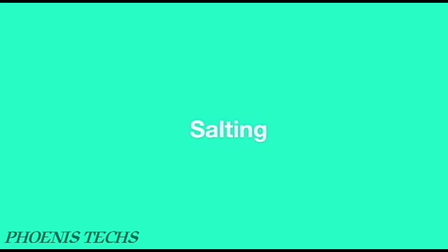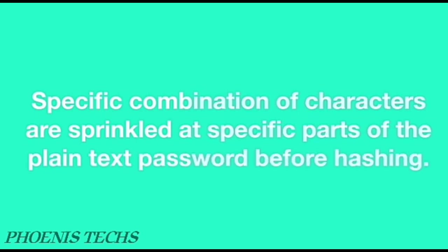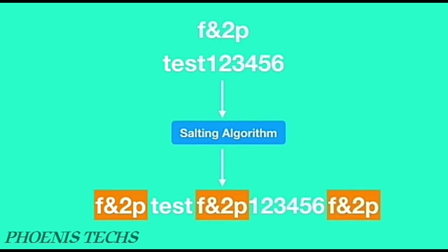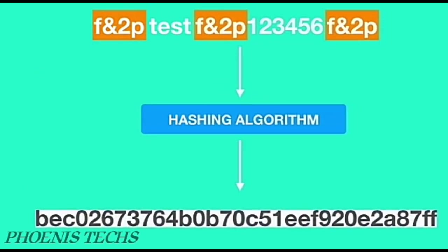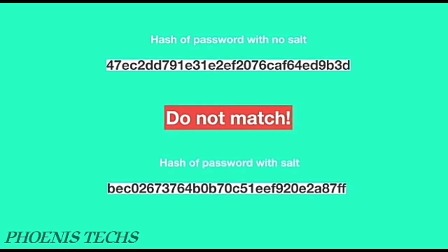A technique called salting is introduced by security analysts to give hackers a hard time cracking passwords. In this technique, a specific combination of characters is inserted at specific positions of the plain text password before hashing. Every company has its own salting algorithm and does not make it public. For example, Facebook's salting algorithm might insert a string like 'f&2p' at the beginning, after the third character, and at the end of the plain text password. The salted password is then hashed. When a salt is used, rainbow tables are of no use even for weak, commonly used passwords, because the hash without salting does not match the hash with salting. Brute force and dictionary attacks are also ineffective against salted passwords unless the hacker already knows the salting algorithm employed by the company.